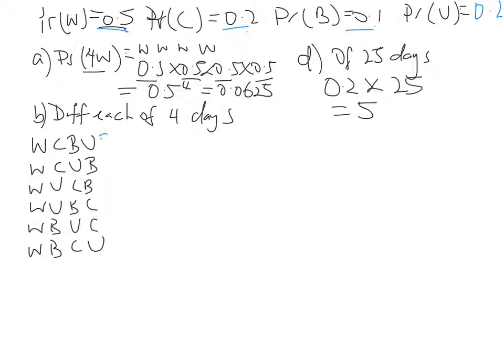So for this to happen, it is 0.5 times probability of a car, 0.2, times probability of his bike, 0.1, times probability of Uber, 0.2. So this ends up being 0.002.